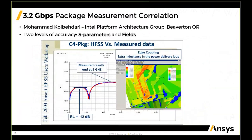Here's the first example — this takes us back to 2004. This is a 3.2 Gbps package measurement correlation done with colleagues at Intel Platform Architecture Group in Beaverton, Oregon. We obtained great correlation of HFSS results to measured results, correlating very well up to 5 GHz — which was the measurement limit available at that time.